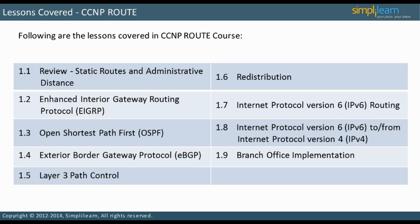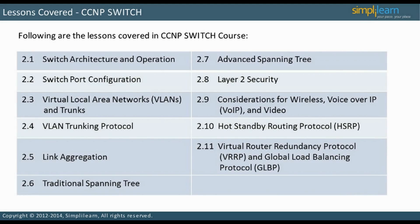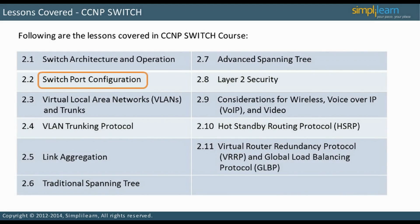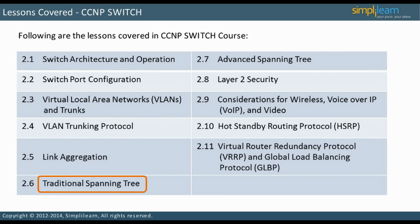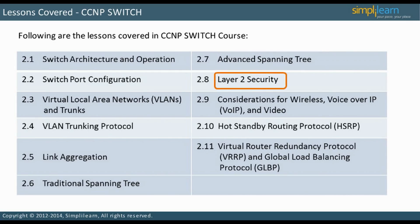In the next slide, we will discuss the lessons in the CCNP Switch Module. For CCNP Switch, the first lesson studies Switch Architecture and Operation. Then we move on to Switch Port Configuration, then VLANs and Trunks, then VLAN Trunking Protocol, followed by Link Aggregation. There are two lessons on Spanning Tree: Traditional Spanning Tree and then Advanced Spanning Tree. The next lesson studies the various aspects of Layer 2 Security. Then we look at considerations for Wireless, VoIP, and Video.